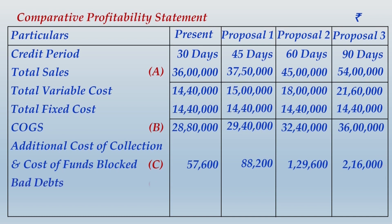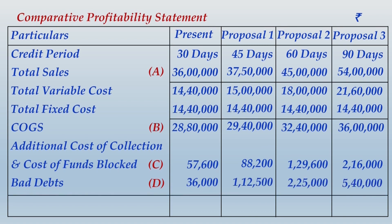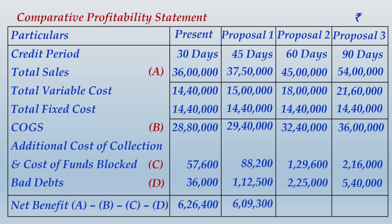And the bad debts — no other information given in the question. So net benefit will be total sales minus cost of goods sold minus cost of funds blocked minus bad debts. Once you have that noted down, I will show you the working note for computing the cost of funds blocked. Other things I am sure you can easily understand how these figures have been arrived at.